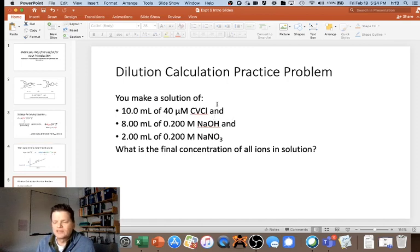We're going to make solutions that are a combination of solutions. For example, you might have 10 mL of 40 μM crystal violet chloride, 8 mL of 0.2 M NaOH, and 2 mL of 0.2 M NaNO₃. You keep them separate at first because you don't want the reaction to start. After you dump them together, the reaction starts, and you'll put them into your cuvette and monitor the color as it goes away. You need to know what the initial concentrations were, as this will be important in your analysis.